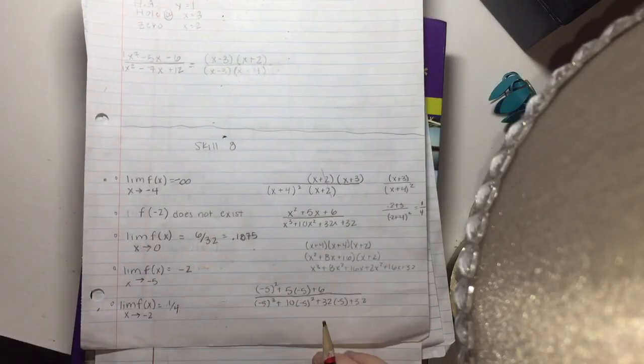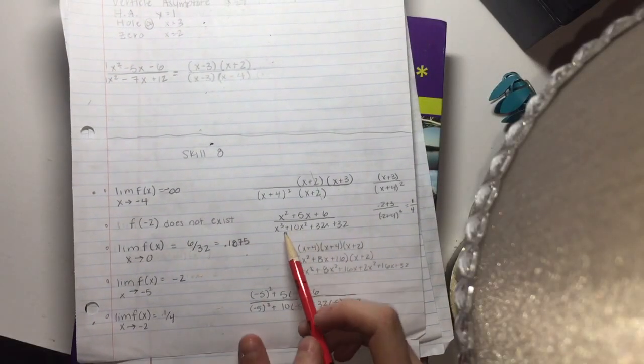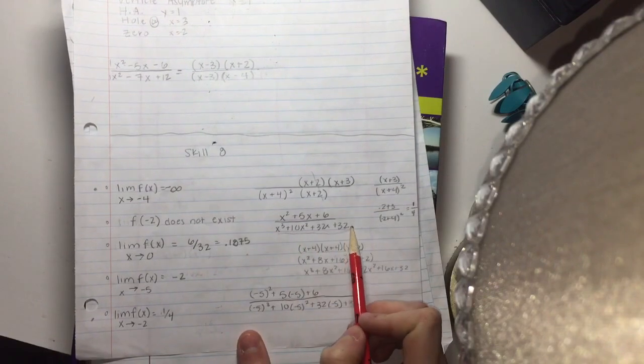Okay, so here's skill 8, and we're starting off with this rational function right here.